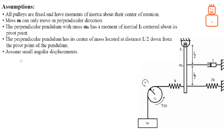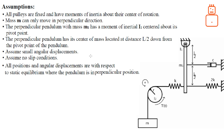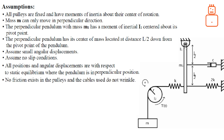A very important assumption is to assume small angular displacement. This assumption enables us to treat the system in a linear fashion, because without it we would need to perform linearization in order to apply linear control theory. We also assume no slipping and no friction effects. All positions and angular displacements are subject to static equilibrium, so we don't include the effects of the pulley or mass in the equations, except that the pendulum's mass affects its dynamics because it has a moment about the supporting point.